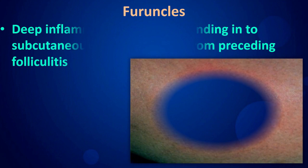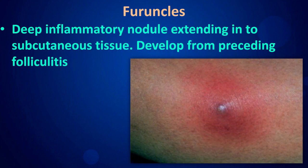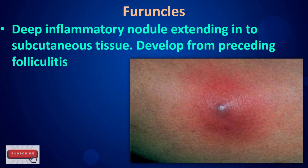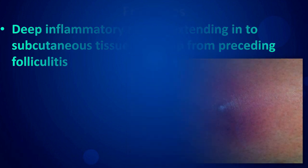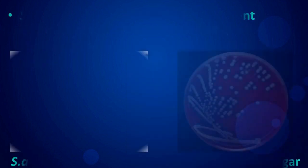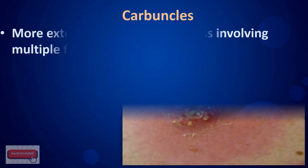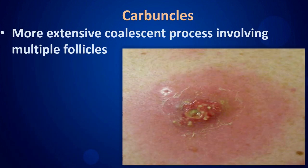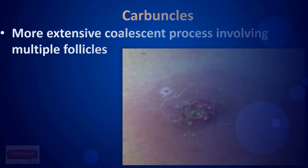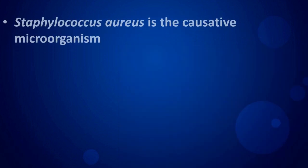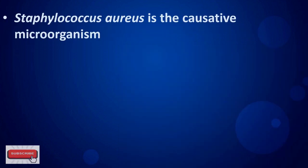Furuncles are deep inflammatory nodules extending into subcutaneous tissue, developed from preceding folliculitis. Staphylococcus aureus is the causative agent. Carbuncles are a more extensive coalescent process involving multiple follicles, with Staphylococcus aureus as the causative microorganism.